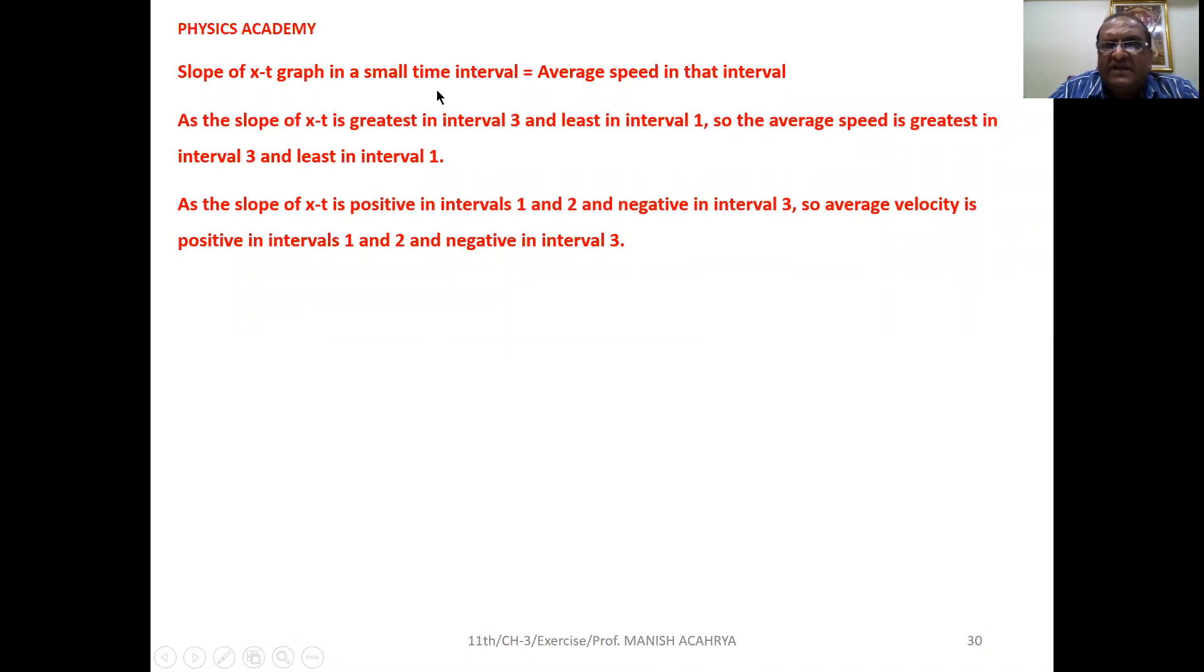Slope of x versus t graph in a small time interval is average speed in that time interval. As the slope of x versus t is greatest in time interval 3 and least in interval 1, so the average speed is greatest in interval 3 and least in interval 1. As the slope of x versus t is positive in interval 1 and 2 and negative in interval 3, so average velocity is positive in interval 1 and 2 and negative in interval 3.